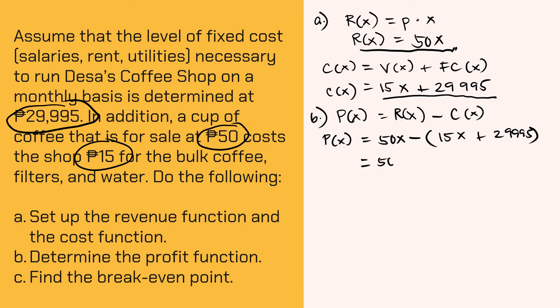Next, we have 50X. Perform the operation, so we have minus 15X minus P29,995. Then do it algebraically. 50X, combine like terms, 50X minus 15X, that is 35X, minus 29,995. So that is P of X. That is the profit function.